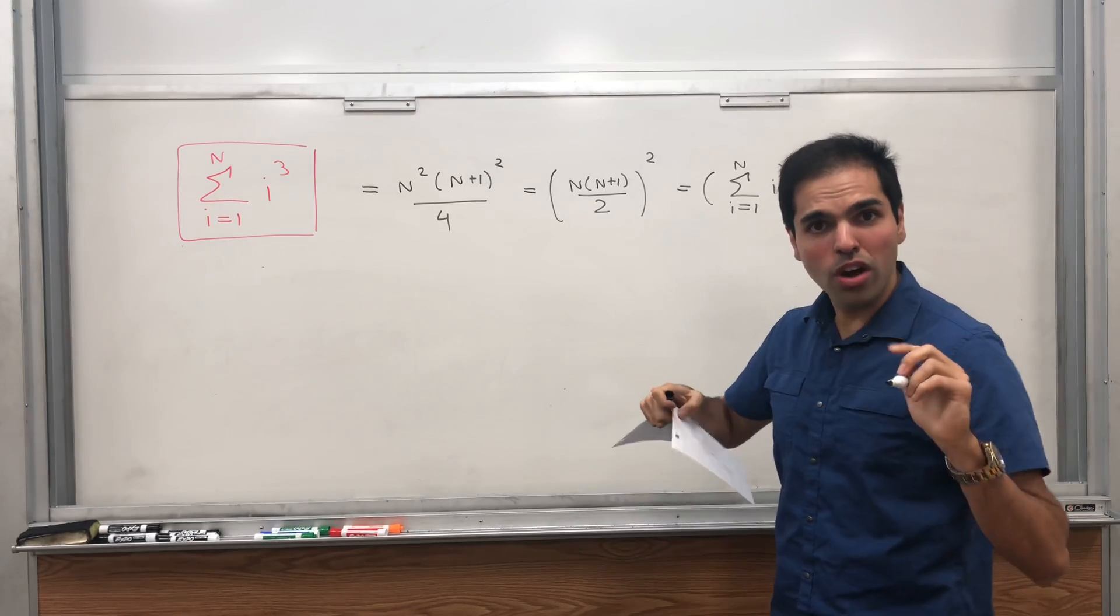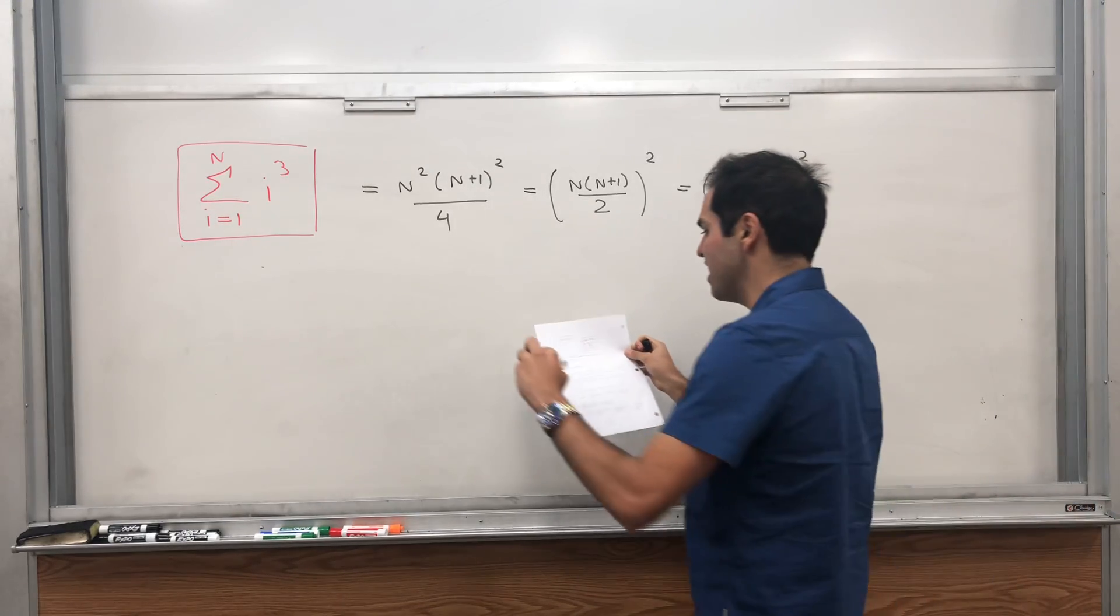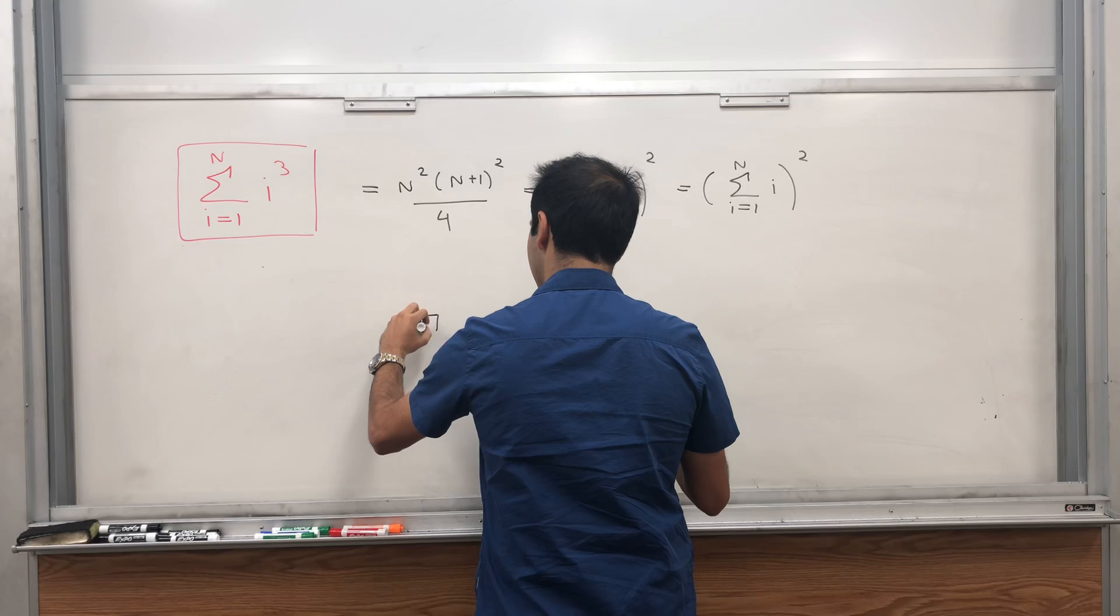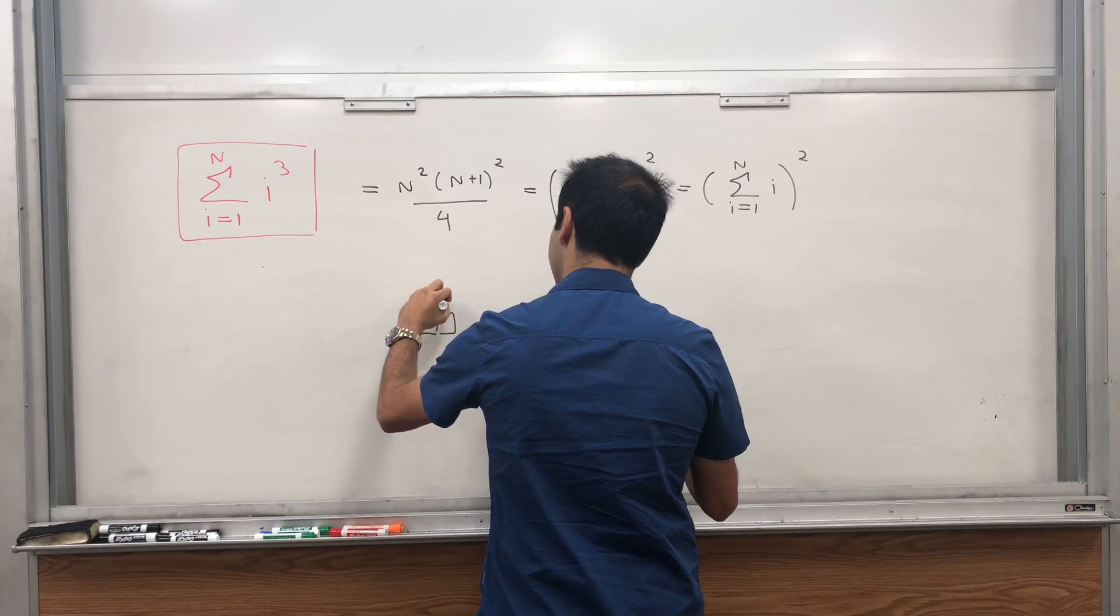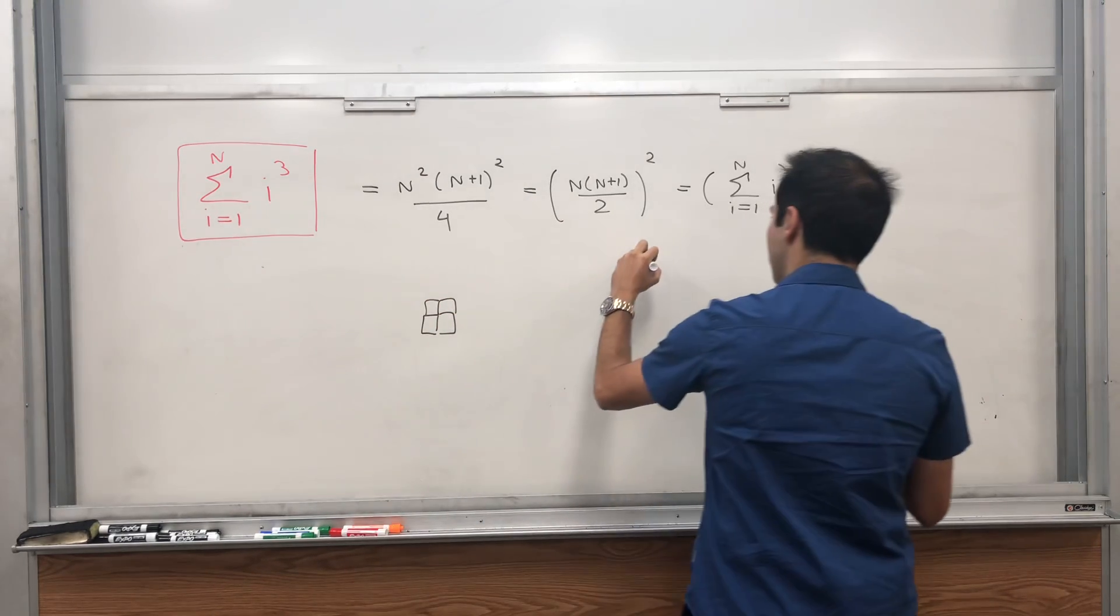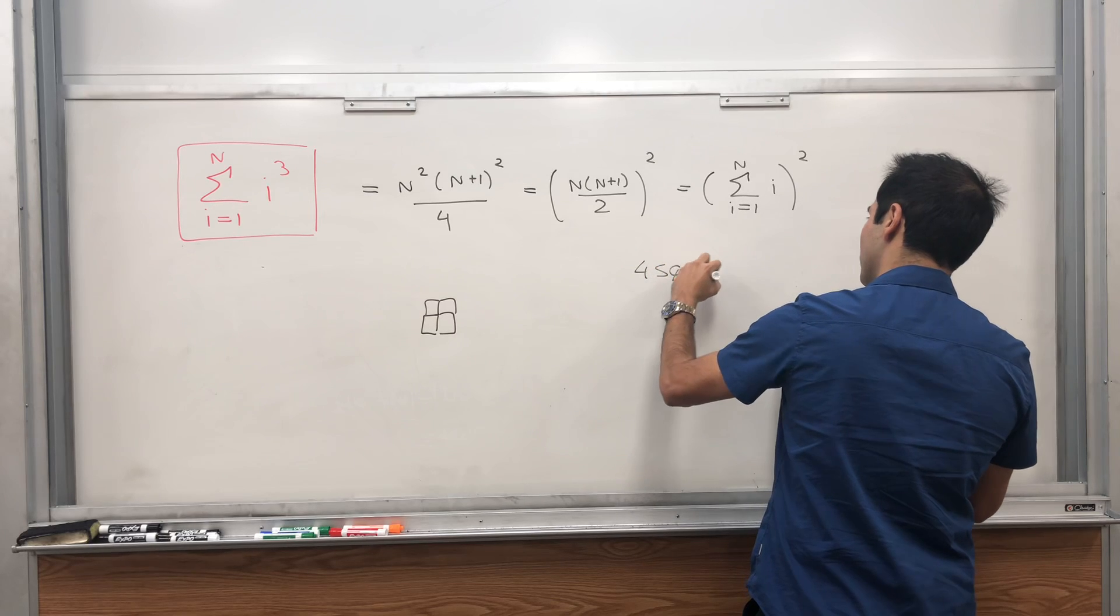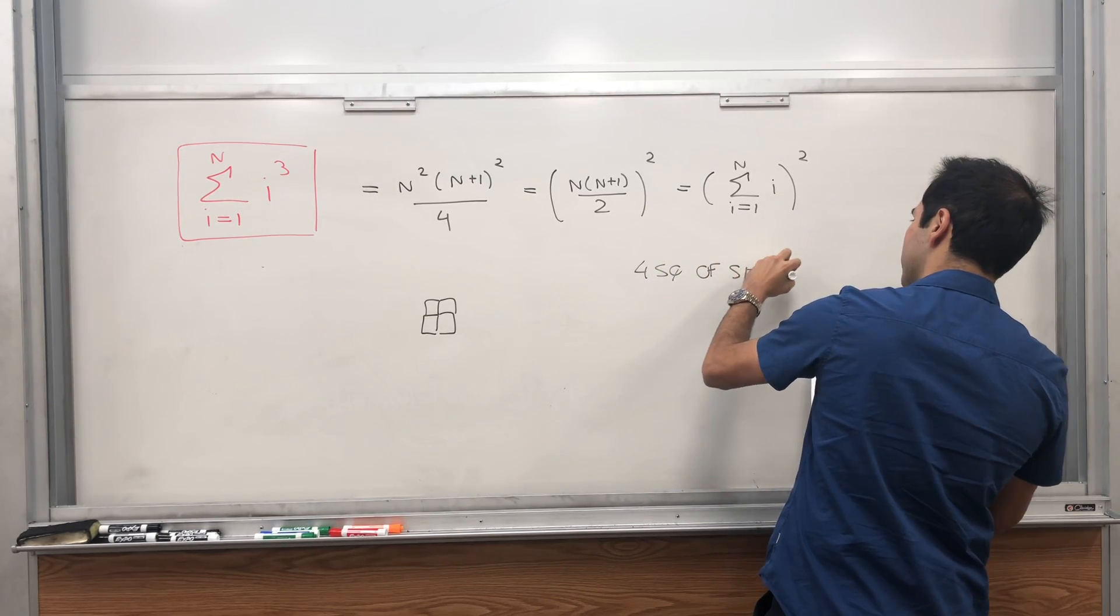Suppose you start with 4 squares of size 1. Something like that. Square, square, square, square. So 4 squares of side 1.